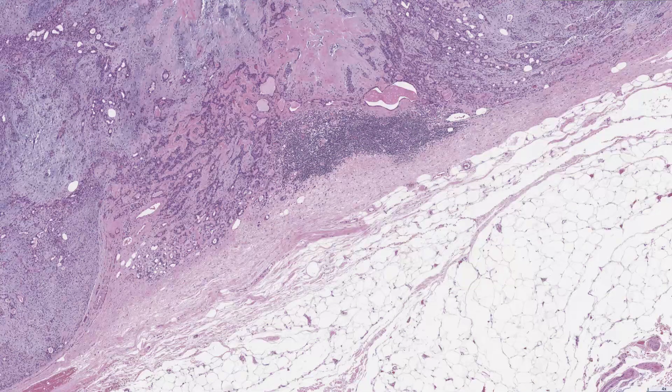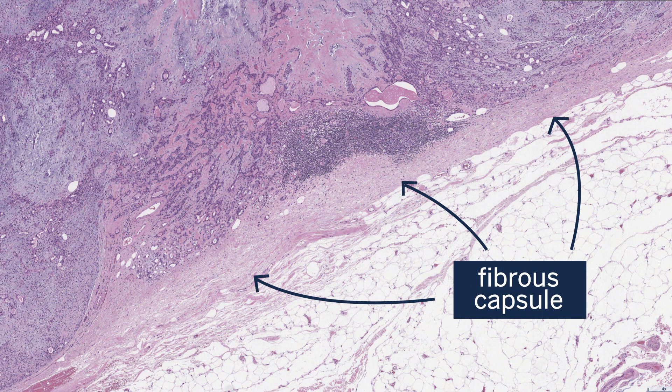In the major salivary glands, pleomorphic adenomas are well circumscribed and encapsulated with a fibrous capsule, so surgically they kind of just pop out. In the minor salivary glands, you tend not to get that encapsulation, so they may have a slightly infiltrative appearance at the periphery — but that's expected and acceptable.